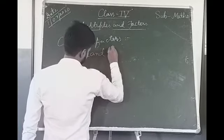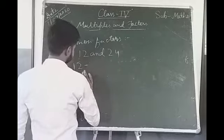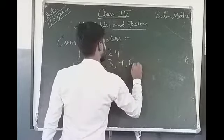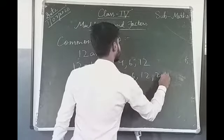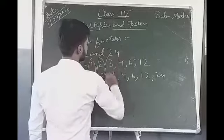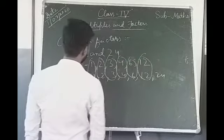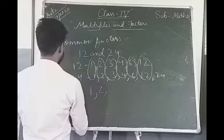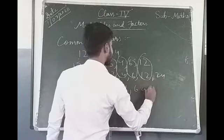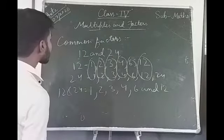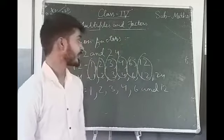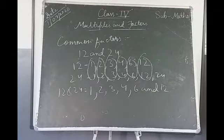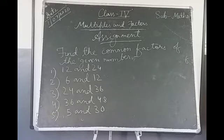Next, 12 and 24. The factors of 12 are 1, 2, 3, 4, 6 and 12. The factors of 24 are 1, 2, 3, 4, 6, 12 and 24. So the common factors of 12 and 24 are 1, 2, 3, 4, 6 and 12. In this way we can find the common factors of a number. That's all for today's class. I will give you some assignment for homework. Thank you.